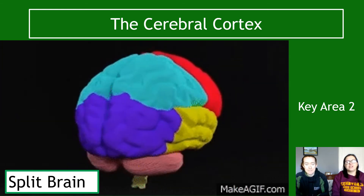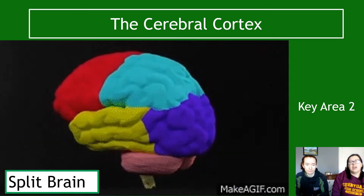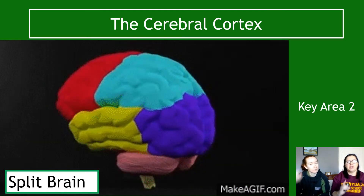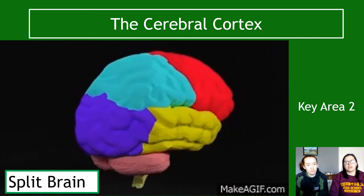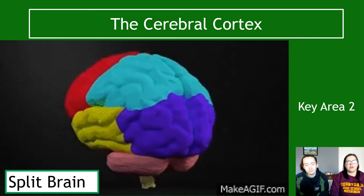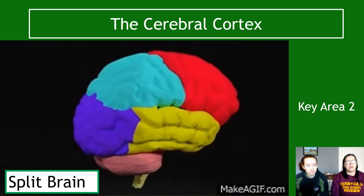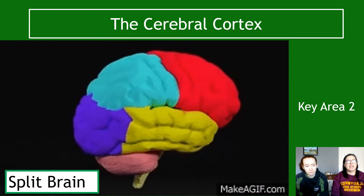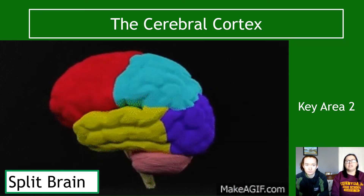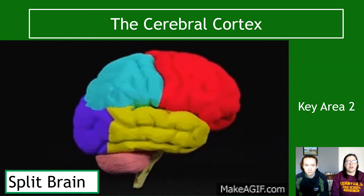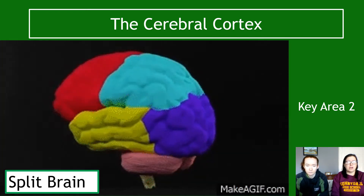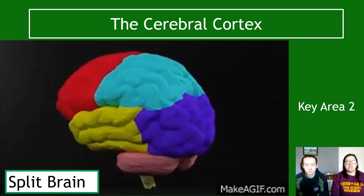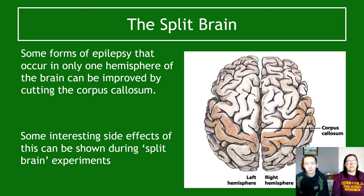We are into section three of key area two, so this is the final video in this key area on the cerebral cortex, and we will be covering split brain. We've included split brain because it's a common exam question that crops up and you need to know how to work through it. Practice some of the past paper questions — you'd be surprised how similar they all are.